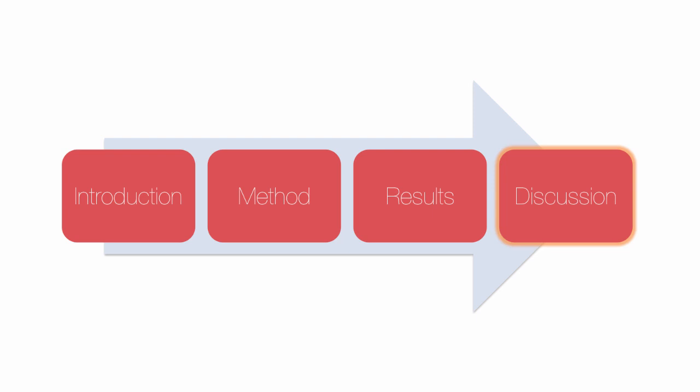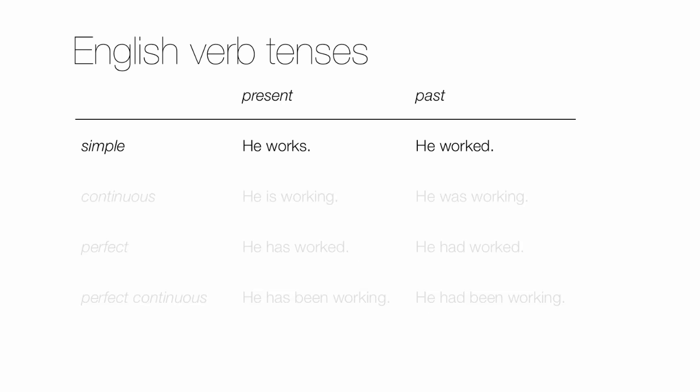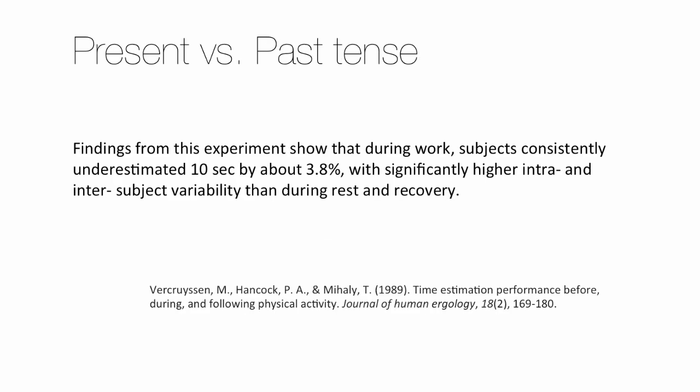But you will also use words that show that you recognize that some of the things you say can't be proven. In fact, you will often discuss opposite possibilities, so there can't be proof. But the reader needs to understand clearly what you know and what is just your suggestion. The discussion section often uses two tenses in a similar way to the introduction and results section.